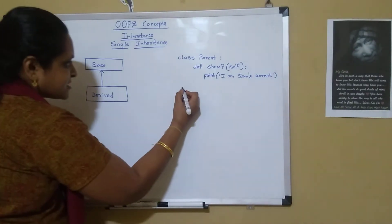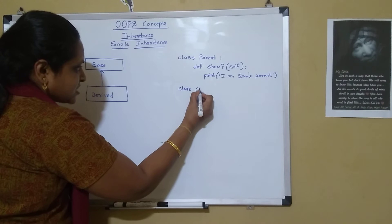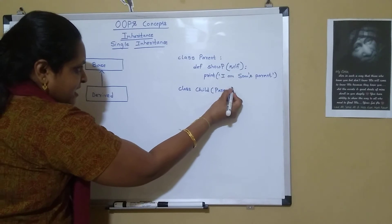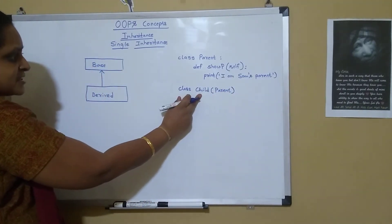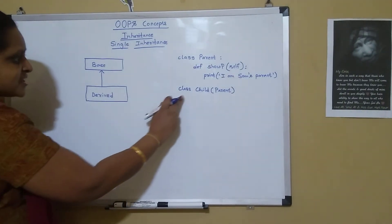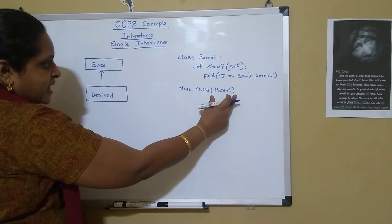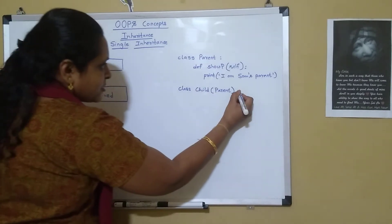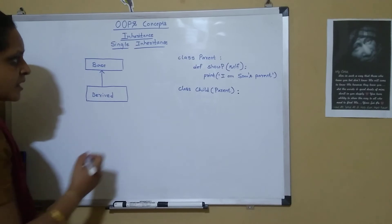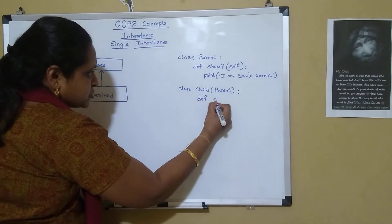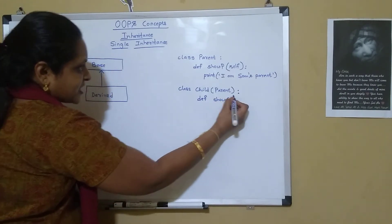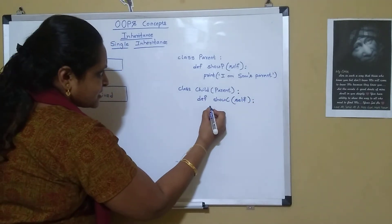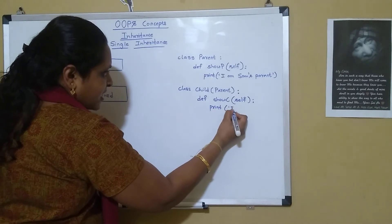Now let me define the derived class. Class 'Child' inherits the properties of 'Parent', so we pass 'Parent' as the parameter within the parenthesis of the derived class — that is, 'class Child(Parent)'. This tells us it is inheriting the properties of the parent class. Inside Child, I define method 'showC' with self, and print 'I am Sam'.